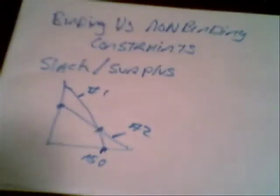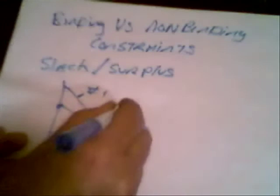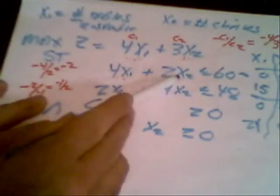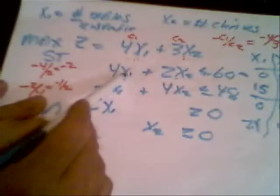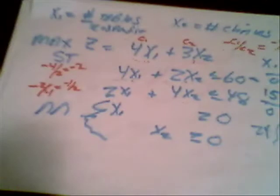Why are they binding? Well, recall that our solution is 12 and 6 at that point. 12 tables and 6 chairs. If you plug 12 and 6 into the left-hand side of the equation, 12 tables, 6 chairs, you get 60. So if we make 12 tables and 6 chairs, our resources in that constraint that we're using is 60. We're using all 60 hours in Department A.